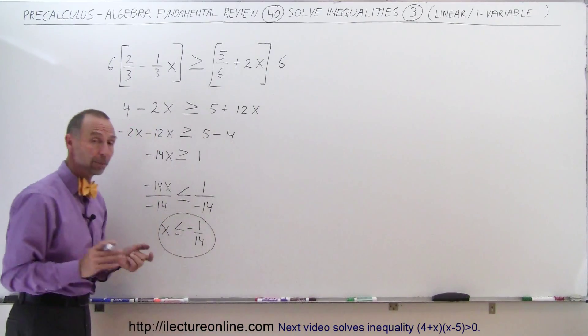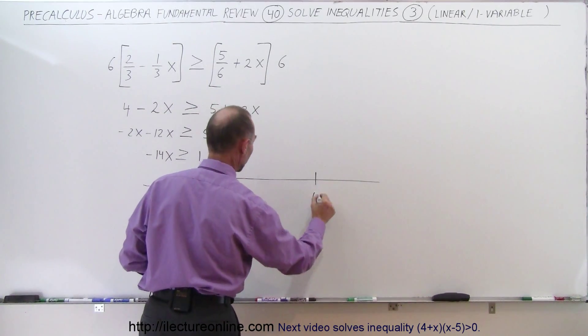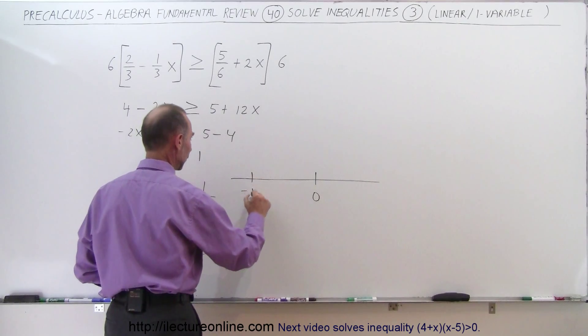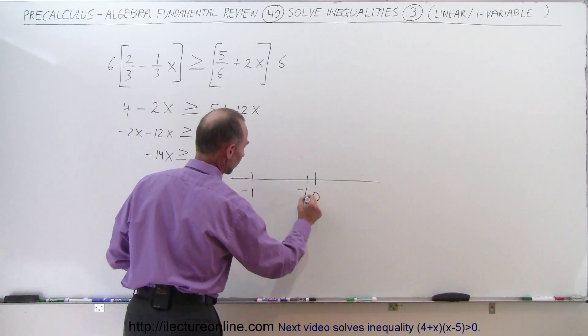Now we can simplify, so we get x is less than or equal to minus 1 over 14. There's the answer. If we want to put that on the number line, what we do is draw the number line, here's the number 0, let's say here's the number negative 1, and 1/14 is about right here, so minus 1 over 14.